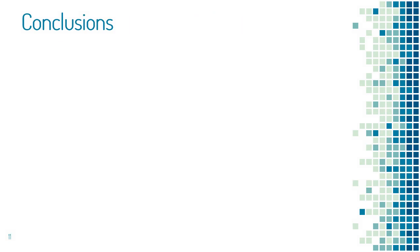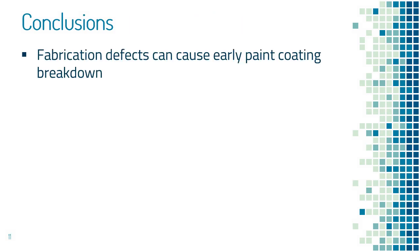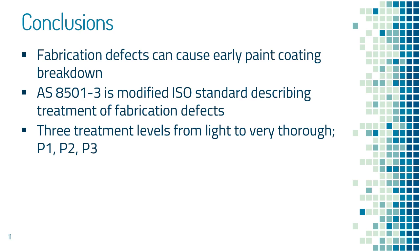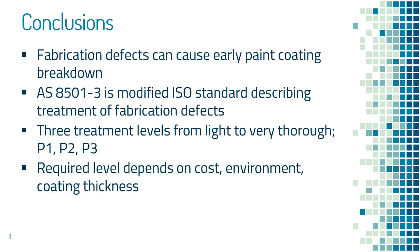In conclusion, be aware that fabrication defects such as sharp edges and weld spatter can cause early breakdown of paints. Australian standard AS 8501-3 is a modified ISO standard which describes these defects and gives three possible treatment levels — P1, P2 and P3 — from light to very thorough. Such treatment is costly and the level required would generally depend on the severity of the environment, although coating thickness can also be an issue.